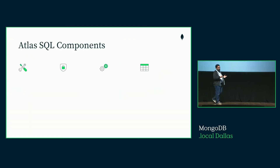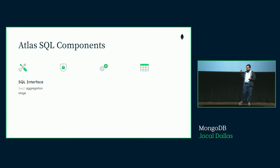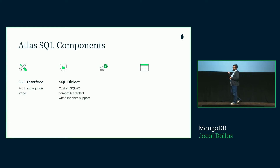Atlas SQL is not a single application or a single component — it's four different pieces of software coming together. The first component is a SQL interface. MongoDB has built a native SQL interface called the $SQL that you can now use in your aggregation pipelines. So you can pull up an aggregation pipeline, which is JSON formatted, and inside one of those JSON blocks you can write a $SQL operator and inside that fill in SQL code — select, insert, whatever it may be.